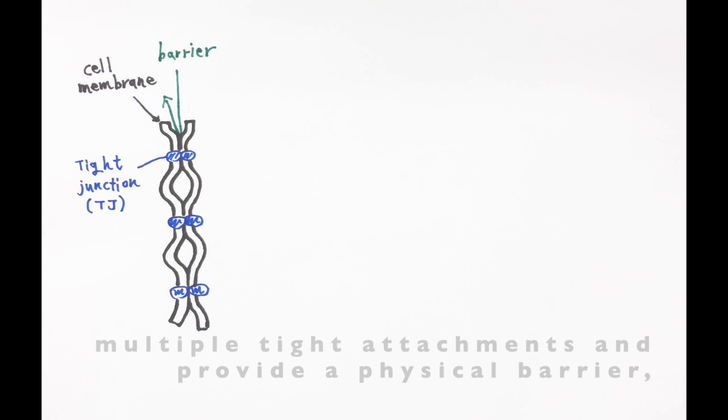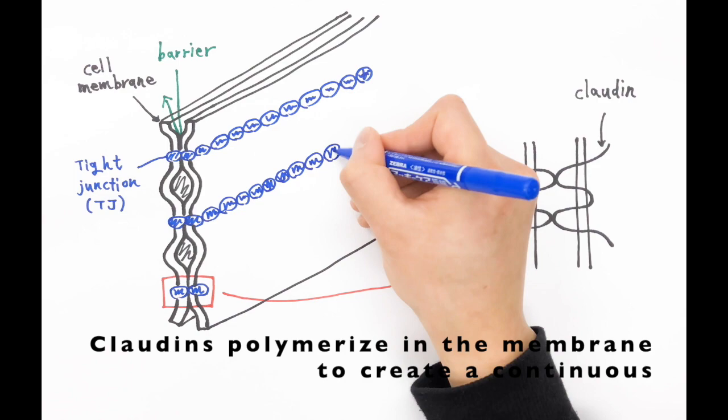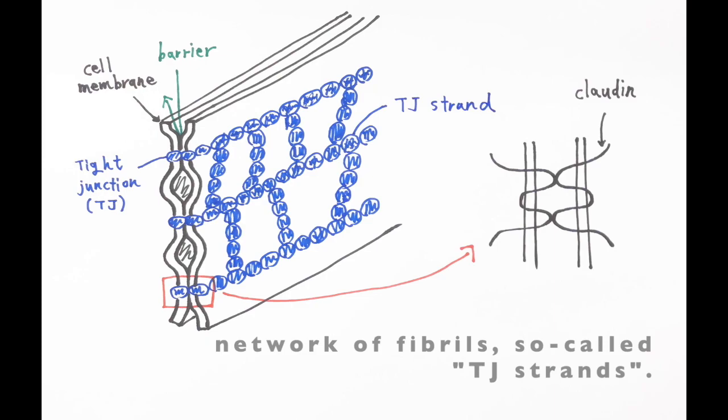This attachment of membranes is mediated by proteins called claudins. Claudins polymerize in the membrane to create a continuous network of fibrils, so-called tight junction strands. In addition to claudins, tight junction strands contain further transmembrane proteins such as occludin and tricellulin.